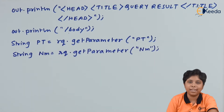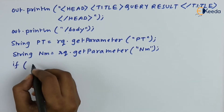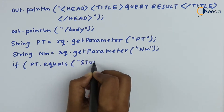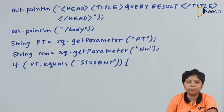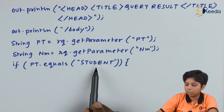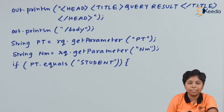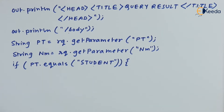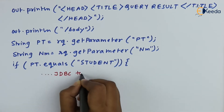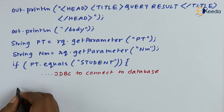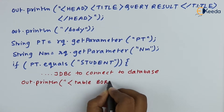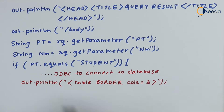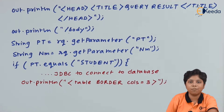The same approach applies for the name field. Now, if the personType equals student — the person type can be either student or instructor — and if the parameter matches student, we will perform the next action. I am using an HTML table to display the result.